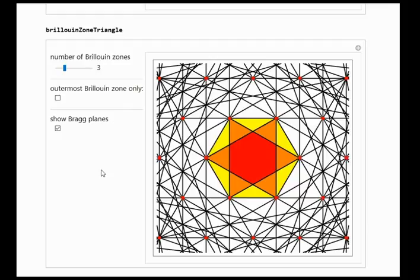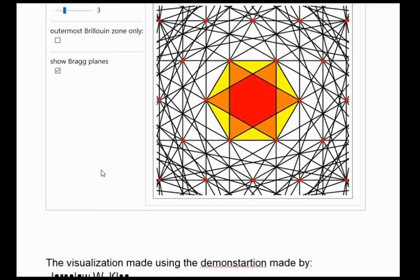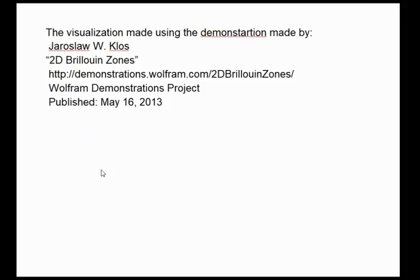So what information does the Brillouin zone hold and what does it give us? In short, vectors in the Brillouin zone or on its boundary characterize states in the system with lattice periodicity, for example, phonon or electron state. But for that, a whole other video. And this code for this demonstration was taken and edited from mathematical demonstrations made by Yaroslav Kloss.